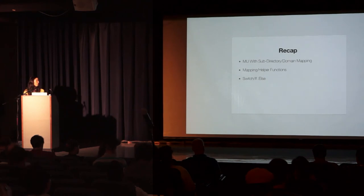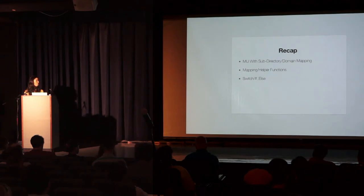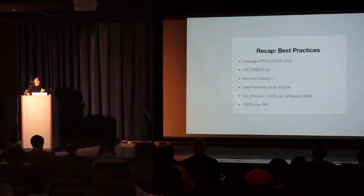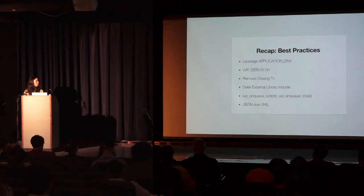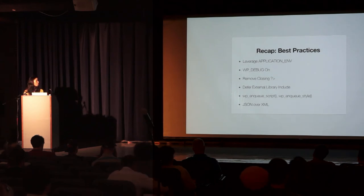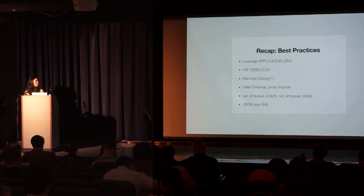To recap: we enabled multisite with sub-directory format and used Domain Mapping to map sub-domains. We created many helper mapping functions for custom development, with lots of switch and if-else statements for theme customization. Best practices: leverage application environment variables for multiple environments, develop with WP_DEBUG enabled, remove the closing PHP tag from pure PHP files to avoid trailing whitespace, defer external libraries so content loads first, use wp_enqueue_script and wp_enqueue_style so WordPress groups script inclusion for better SEO, and use JSON over XML when you have a choice.